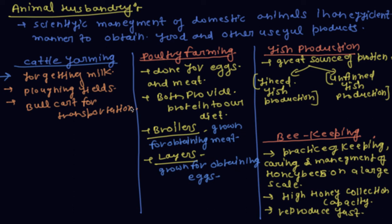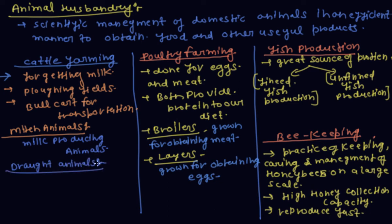The animals are of two types. Which animals include milk production animals and second is draught animals.